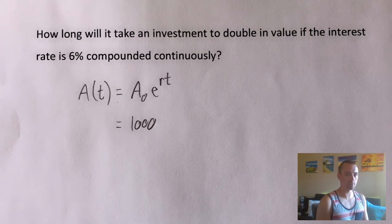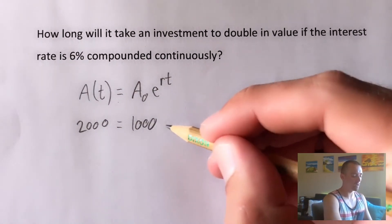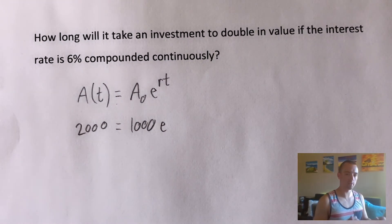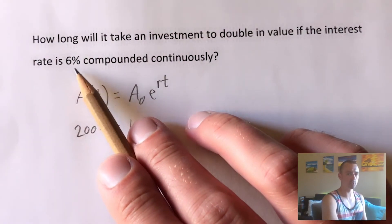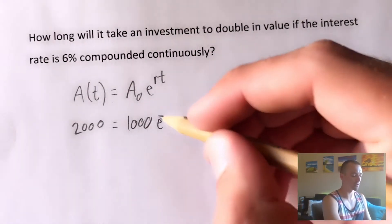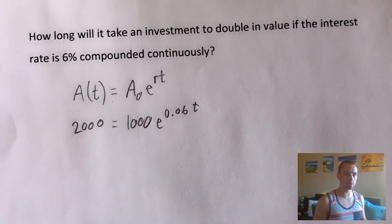What's important is we're trying to figure out the amount of time it takes for this to double. So if we're starting with $1,000, we want to figure out how long it takes to get up to $2,000. And then we're still going to have this E here, again, that's a constant. Our R, or the R in this equation is the interest rate, which is just going to be taking this 6% interest and converting it into a decimal, which is going to be 0.06. And then t is the thing we're trying to solve for. So obviously, we're not going to be able to plug in something for that.